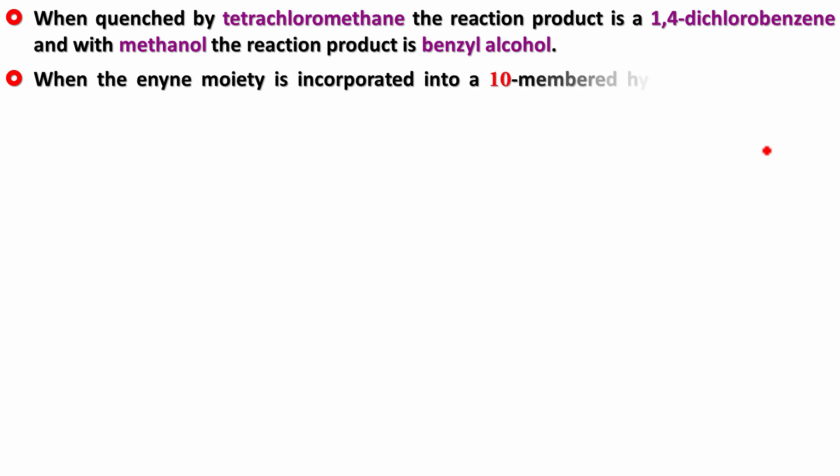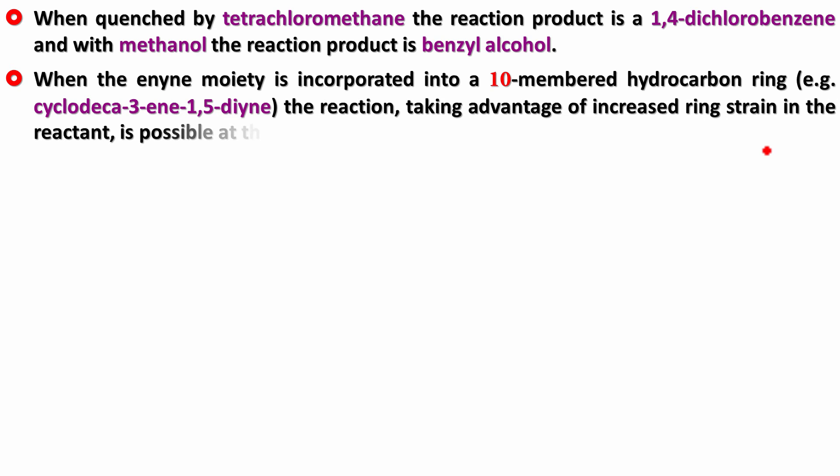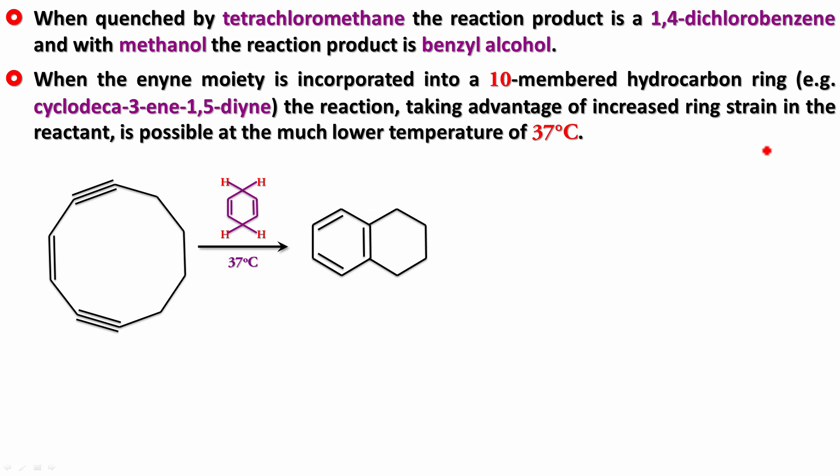When the enedine moiety is incorporated into a 10-membered hydrocarbon ring like cyclodeca-3-ene-1,5-diyne, the reaction, taking advantage of the increased ring strain in the reactant, is possible at the much lower temperature of 37 degrees celsius. At 37 degrees celsius, reacting with cyclohexa-1,4-diene, you get the product and the benzene ring formed from that cyclohexa-diene.